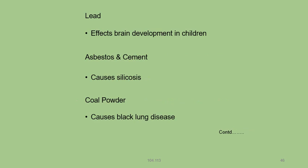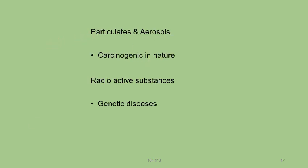Lead present in the air affects brain development in children. Asbestos cement causes silicosis disease. Coal powder present in the air causes black lung disease. Particulate aerosols are carcinogenic in nature. Radioactive substances present in the environment cause genetic diseases.